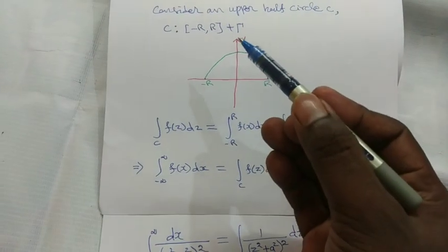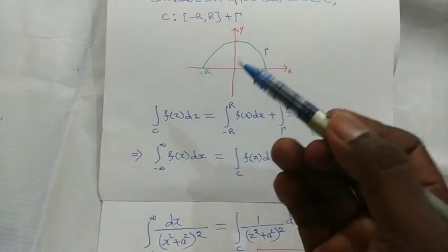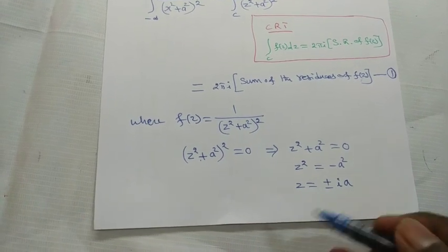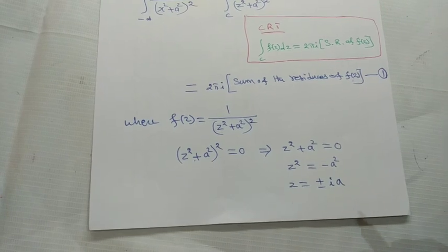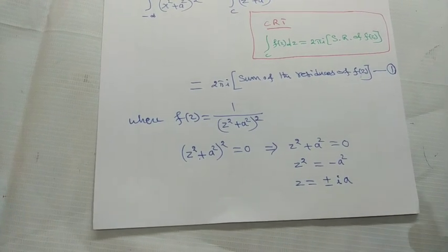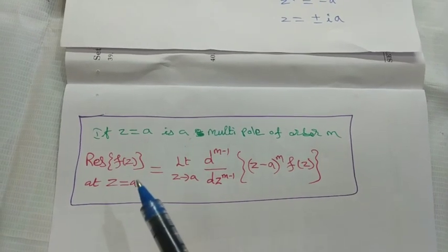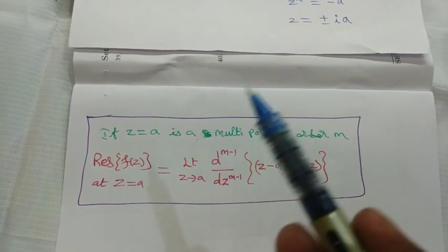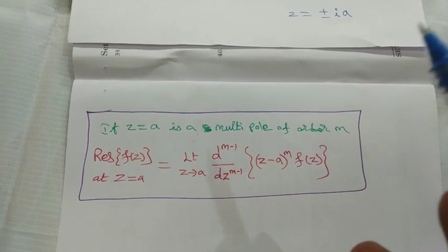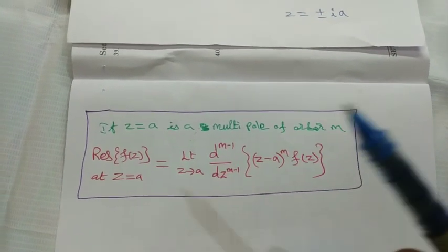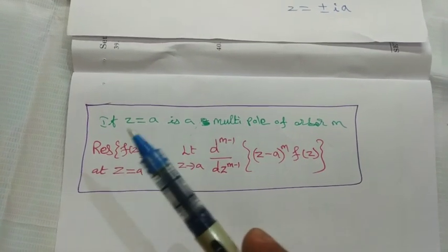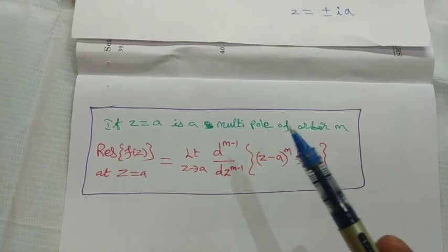Therefore we find the residue at +ia only. The residue formula for a multipole of order m at z = a is: limit as z tends to a of (1/(m−1)!) × d^(m−1)/dz^(m−1) × [(z − a)^m × f(z)]. Here z = ia is a multipole of order 2, so m = 2 and a = ia.